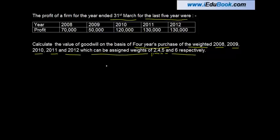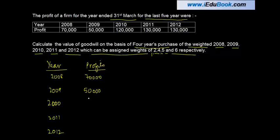So what you're told is that you're given a particular year, you're given the profits for that year. 2008, 2009, 2010, 2011 and 2012. The profits are seventy thousand, fifty thousand, one hundred and twenty thousand, one thirty thousand and again one thirty thousand.